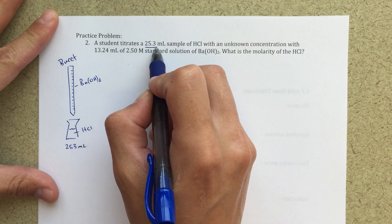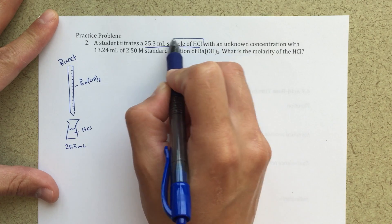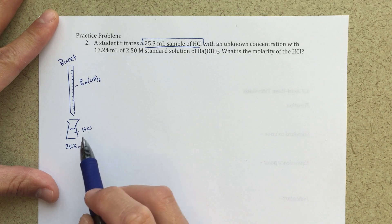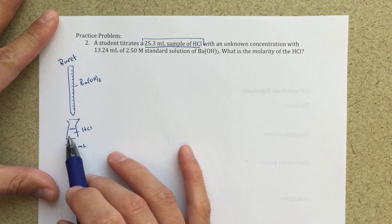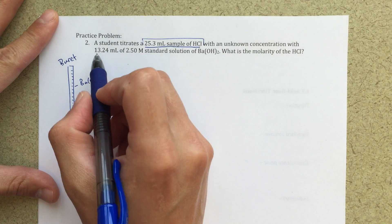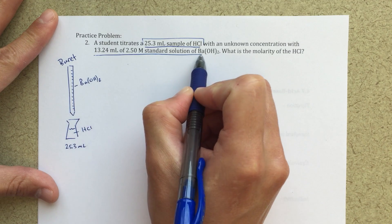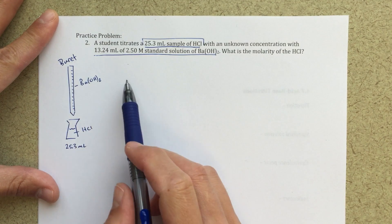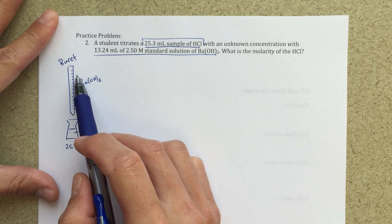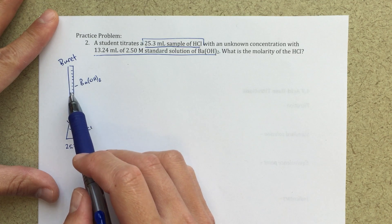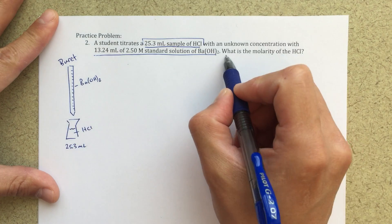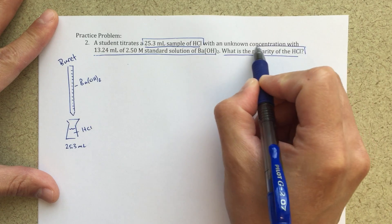It says, a student titrates 25.3 milliliters of HCl, so that would be my HCl that's down here in my Erlenmeyer flask, with an unknown concentration. So this solution, we don't know what the concentration of that is. And I'm going to titrate that with 13.24 milliliters of this standard solution of barium hydroxide. So I've got my standard solution of barium hydroxide up here, and I'm going to dispense 13.24 milliliters from my burette, and it's 2.5 molar solution. And the question is, what is the molarity of the HCl?